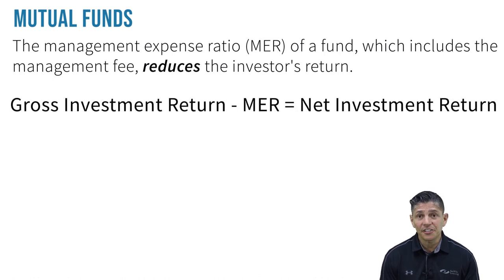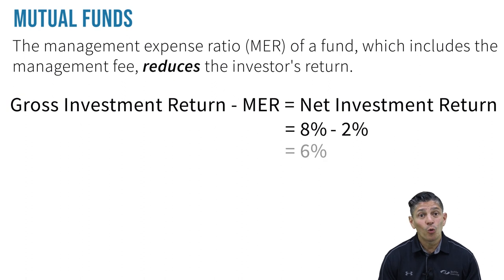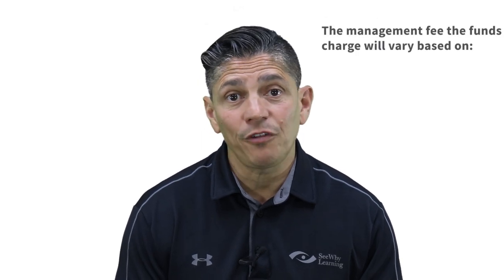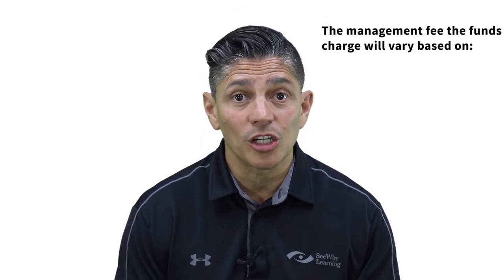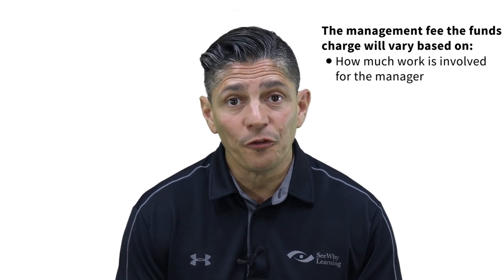It's important to note that the management expense ratio of a fund, which includes the management fee, reduces the investor's return. For example, if the fund had an 8% gross return before fees but has a 2% MER, the unit holder's net return would only be 6%. Now, this doesn't necessarily mean that lower management fees are always best.